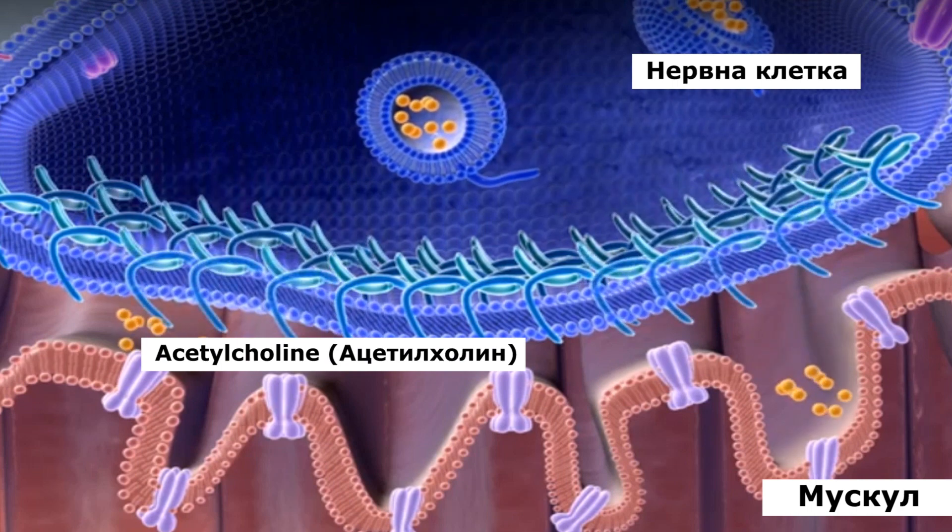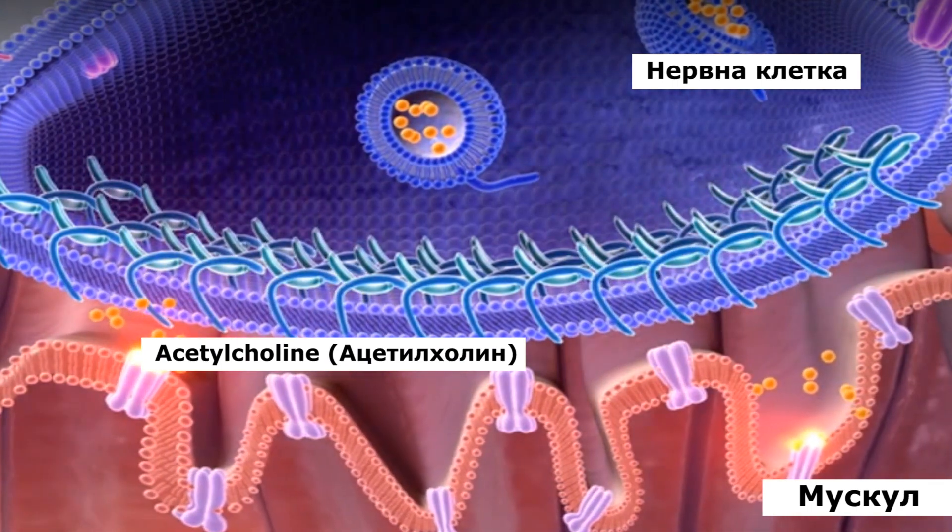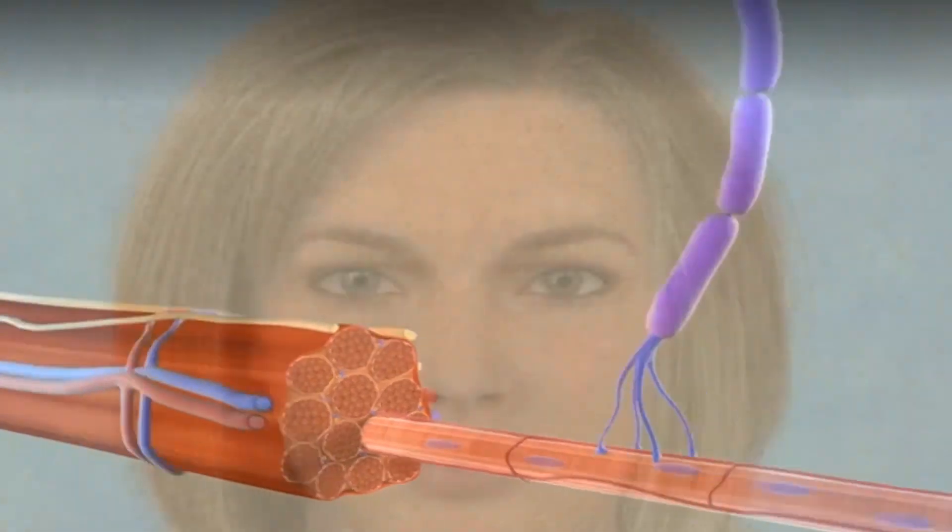Nerves release neurotransmitters, which are chemicals that send signals or impulses to other nerves, muscles, or the brain. Nerve impulses are what trigger muscles to contract or move.